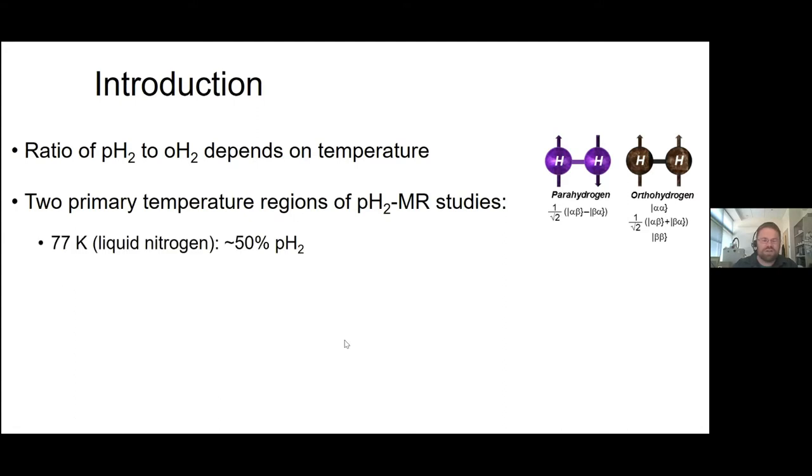A lot of people use liquid nitrogen as that cooling factor, which gives you about 50% parahydrogen. If you want, you can go a bit lower in temperature down to around 20-25 Kelvin, where hydrogen starts to liquefy. That gives you 99 to 100% parahydrogen. You can buy these off the shelf or make your own. They cost money and time and expertise to put together.